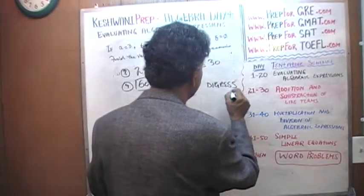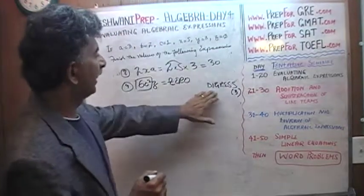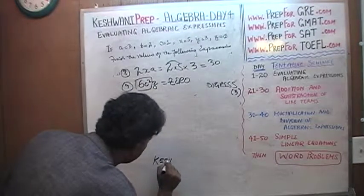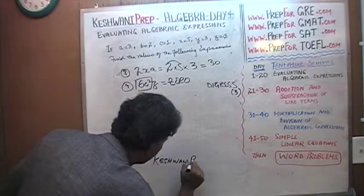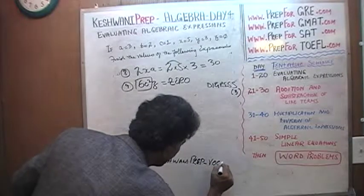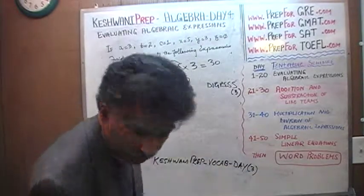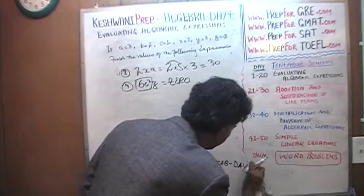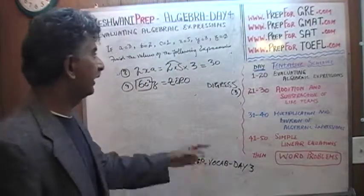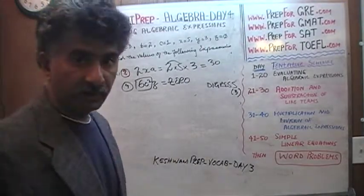Digress for day number three. Just type in Keshwani Prep dash vocab. Keshwani Prep dash vocab dash day three. Just type in this tag and you will learn the word digress. So allow me to digress means to go off a topic. Allow me to digress for a second.